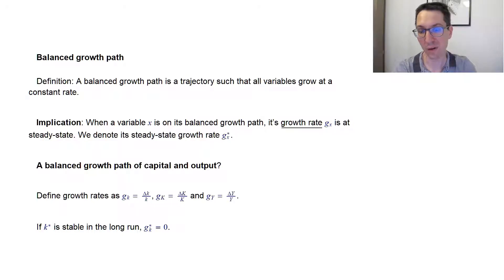So if a variable is at steady state, then its growth rate is zero. So it's constant. But then it also means that other variables can grow. But as long as the growth rate is constant, then we see it's a balanced growth path.